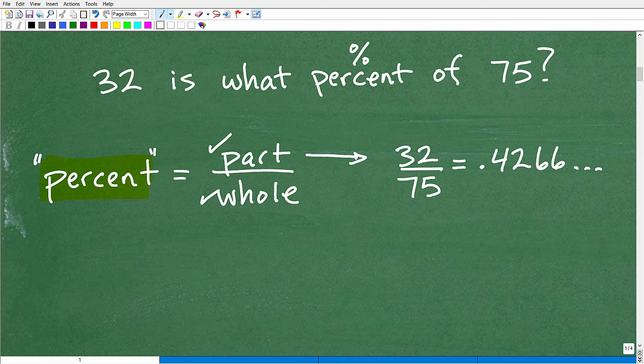So if we look at this question, 32 is what percent of 75? What is the whole and what is the part? Well, the smaller number here, 32, is the part, and the larger number here, 75, is the whole. So we want to set this up as a part out of a whole. So 32 is, we want to write this as a fraction, 32 over 75.